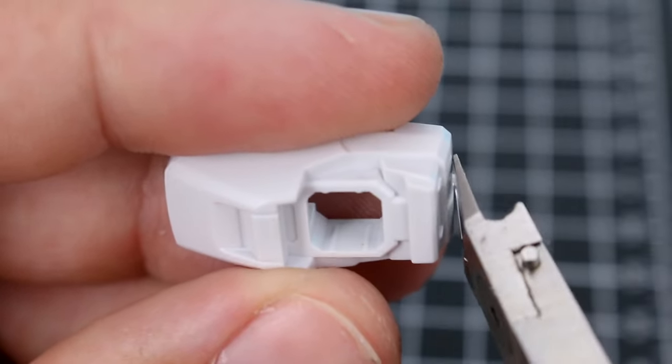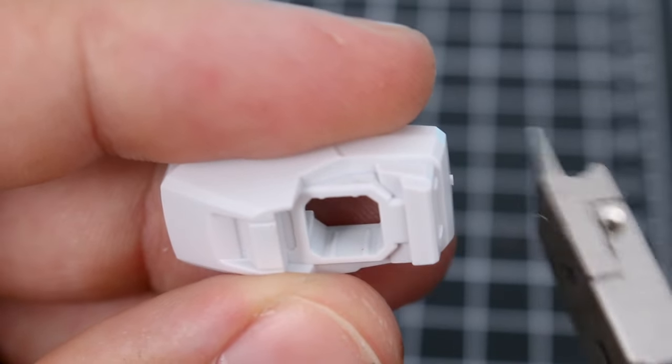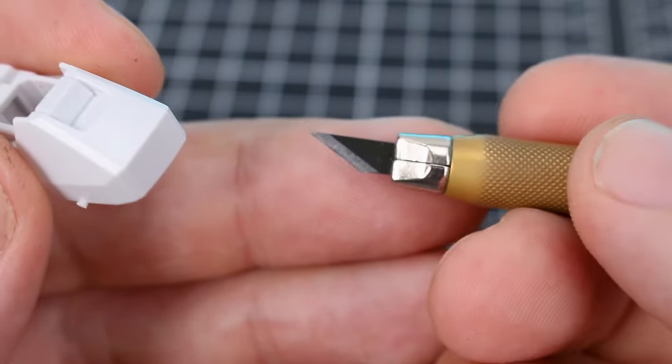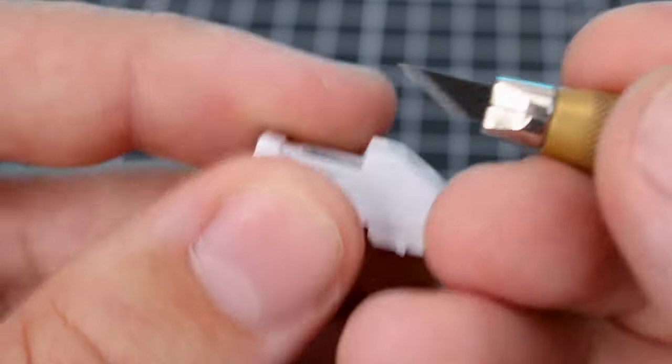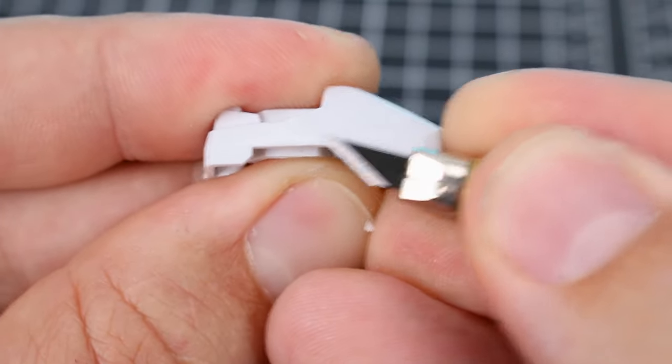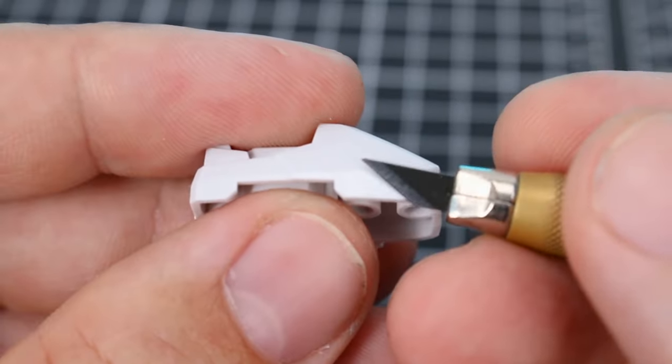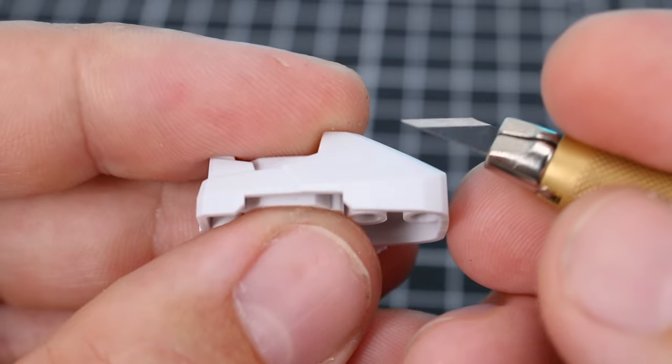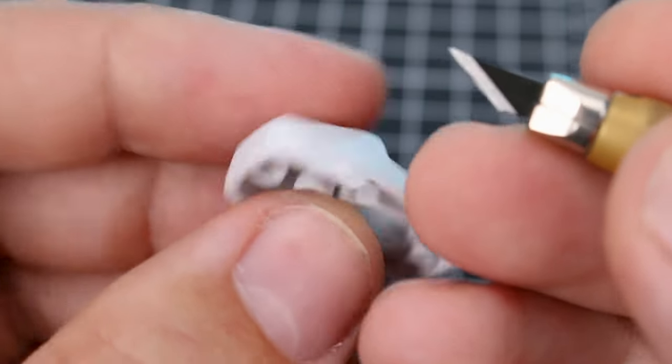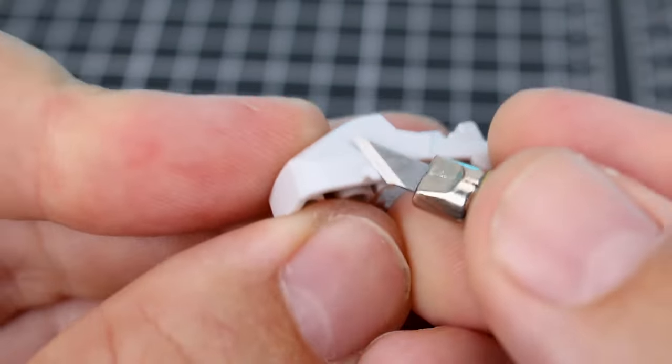For the next step, you can either cut the nub down further using your nippers or, for my personal preference, I would switch to a hobby knife. You just want to make sure to exercise caution because obviously you're using a sharp knife very near your fingers. Either cut towards or away from yourself, whichever is more comfortable for you, just make sure that you're careful and using proper knife handling technique.